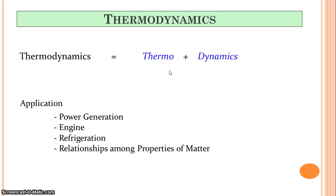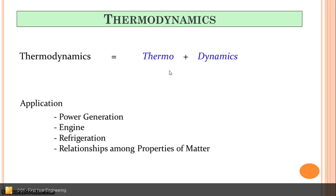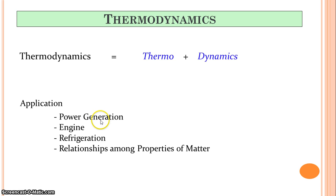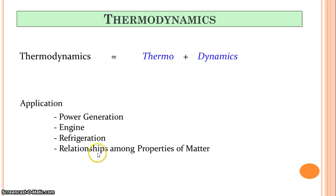What are the applications of thermodynamics or thermal engineering? Power generation is one application — for example, in a thermal power plant we convert coal into electrical energy. There is energy interaction, energy transfer, and energy transformation. Engines are another important application — all automobiles have engines. Then refrigeration, air conditioning, and we also study the relationship among properties of matter.